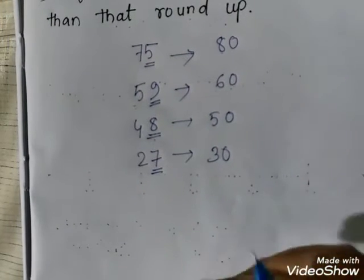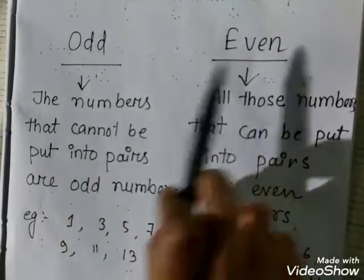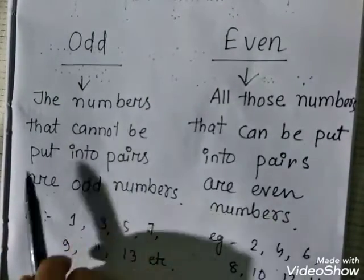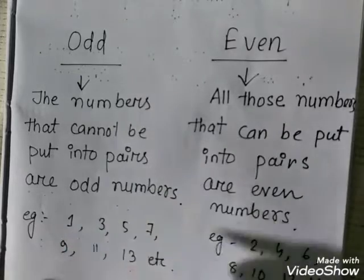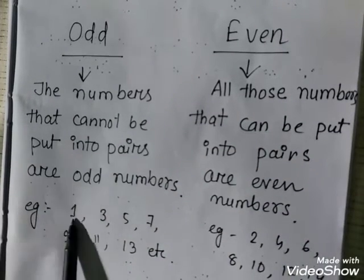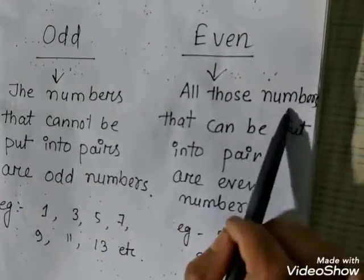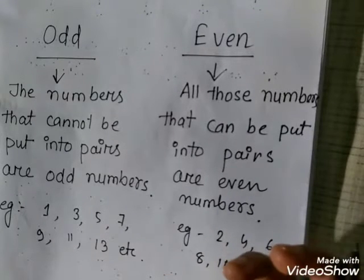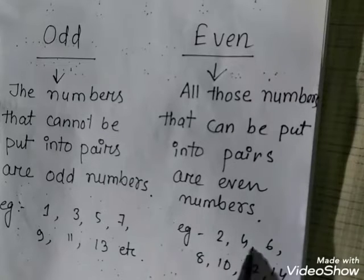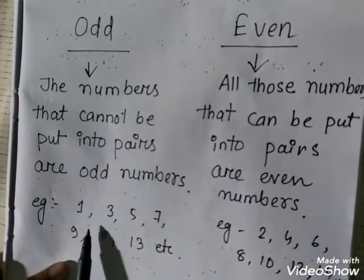Now we will discuss odd and even numbers. An odd number is a number that cannot be put into pairs. The numbers which we cannot pair are called odd numbers — for example: 1, 3, 5, 7, 9, 11, 13, etc. Even numbers are all those numbers that can be put into pairs — for example: 2, 4, 6, 8, 10, 12.